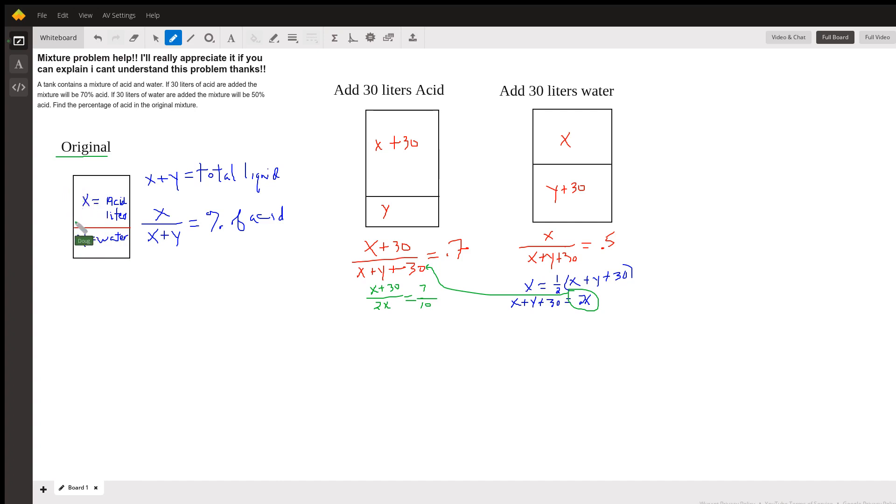Well, the total liquid in this tank at this point in time is x plus y, and the percentage of acid would be the part divided by the whole, acid divided by the total amount of liquid, and that's what we want to find, the percentage of acid in the original mixture.